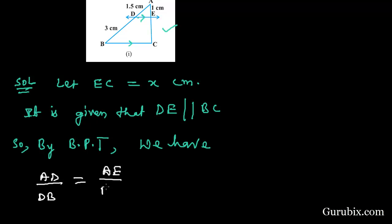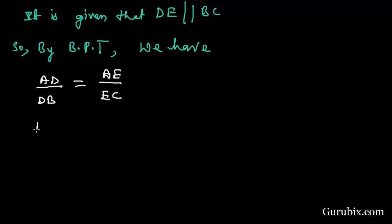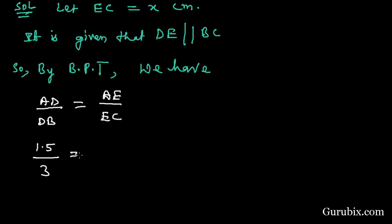AD is 1.5 and DB is 3. AE is given 1 centimeter and we have let EC is equals to x.